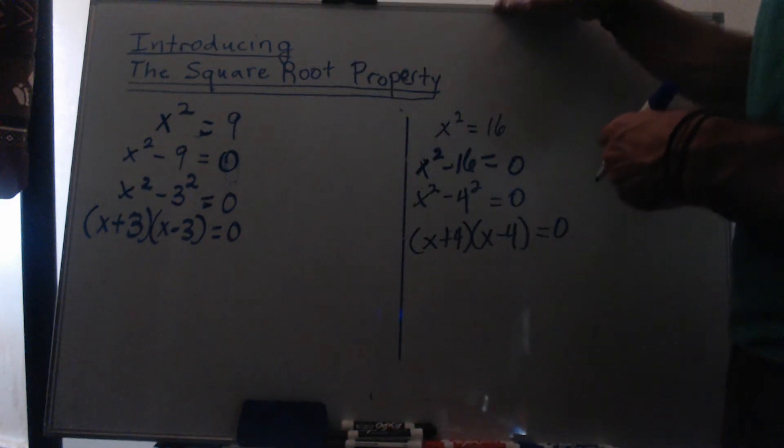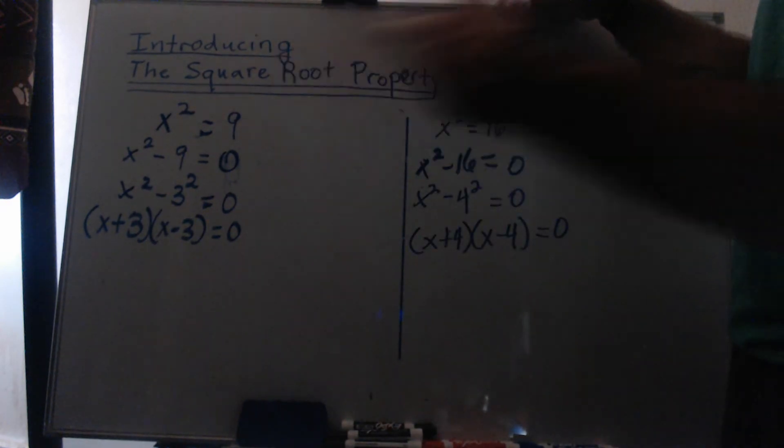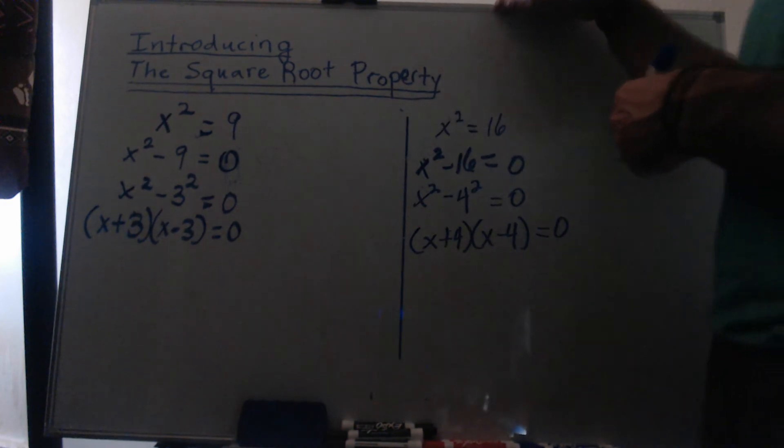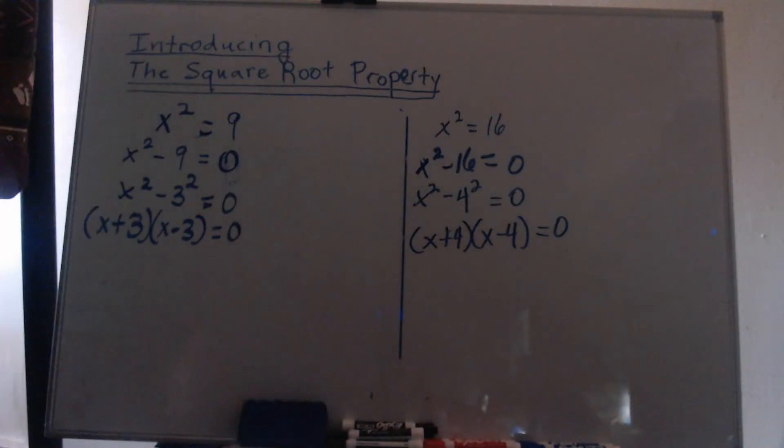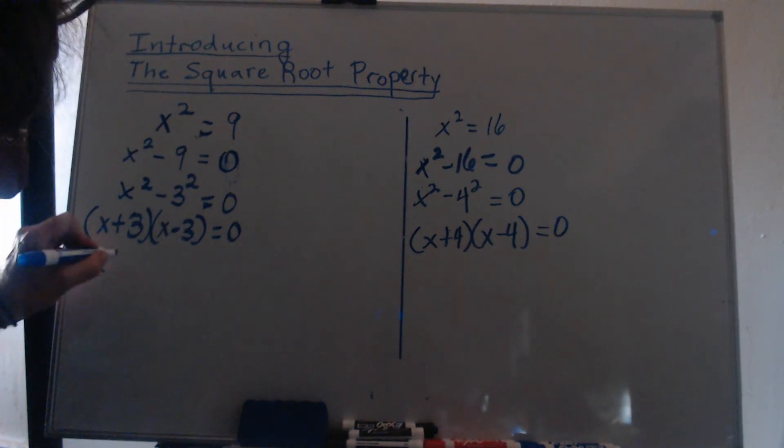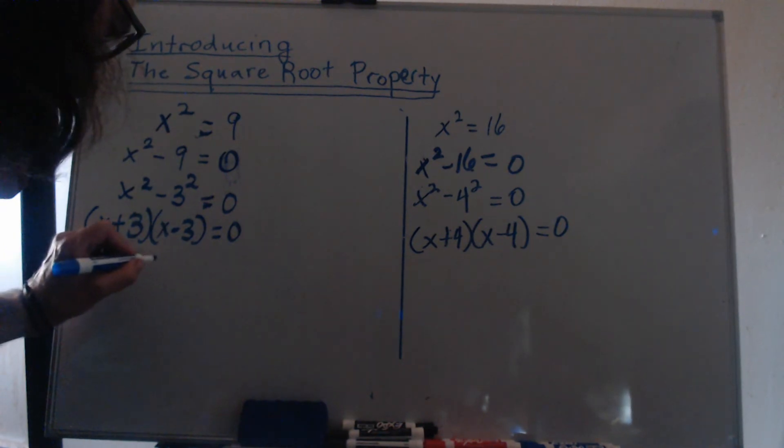Well, in each case, then we would have to apply the zero-factor property. If a times b is equal to zero, either a is zero or b is zero.